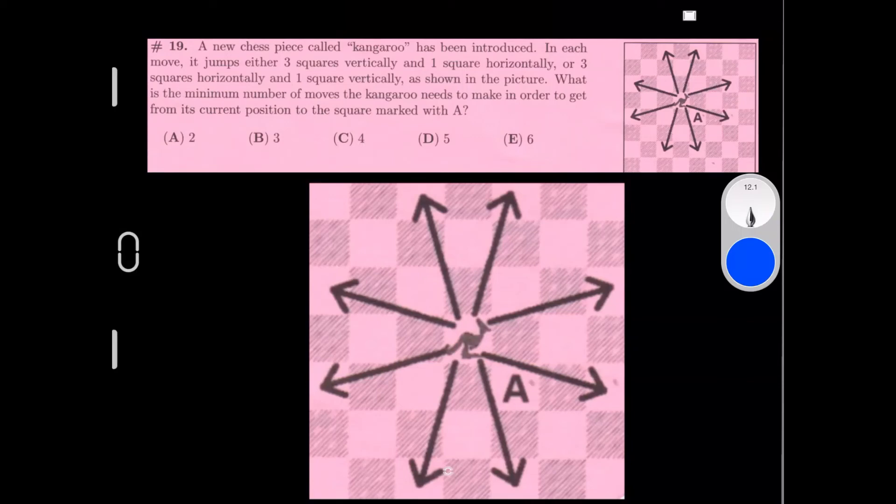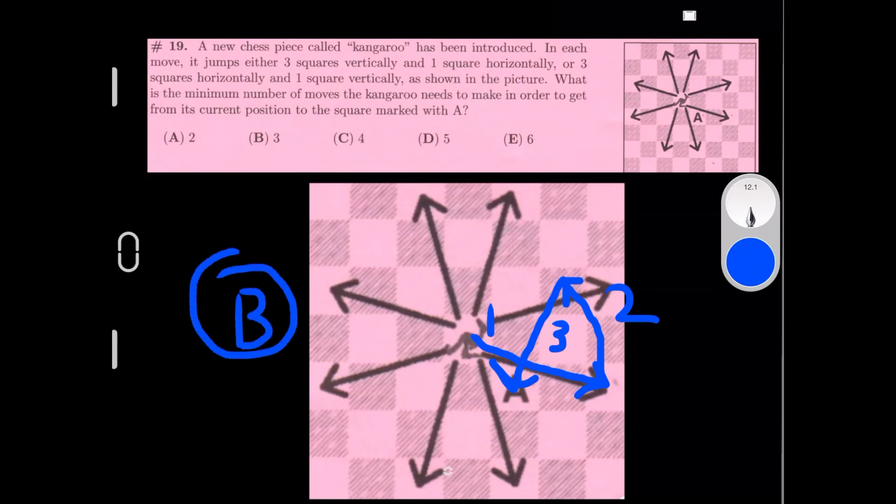One way this can do it is it can go down here, then this can move up 3 squares horizontally up here, and then it can come down at A. That would be 1, 2, and then 3 moves. So our answer is B, 3 moves.